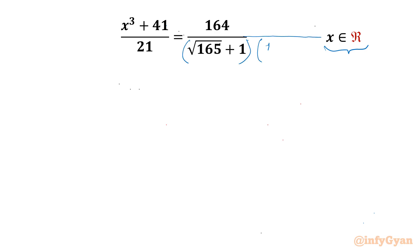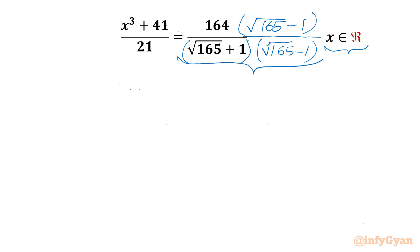I will multiply the numerator and denominator by (√165 − 1). Now we have an (a + b)(a − b) form in the denominator, so we can use the difference of two squares formula, which gives us √165 whole square minus 1 whole square. So I can write 165 minus 1.